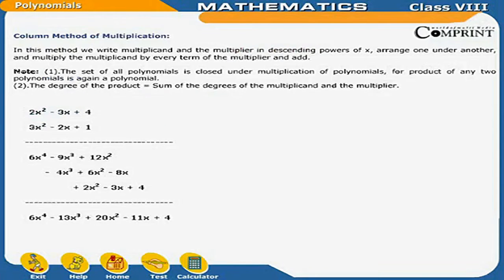The column method of multiplication: write the multiplicand and the multiplier in descending powers of x, arrange one under another, and multiply the multiplicand by every term of the multiplier, then add. Example: (2x² minus 3x plus 4) multiplied by (3x² minus 2x plus 1) gives 6x⁴ minus 9x³ plus 12x² minus 4x³ plus 6x² minus 8x plus 2x² minus 3x plus 4.